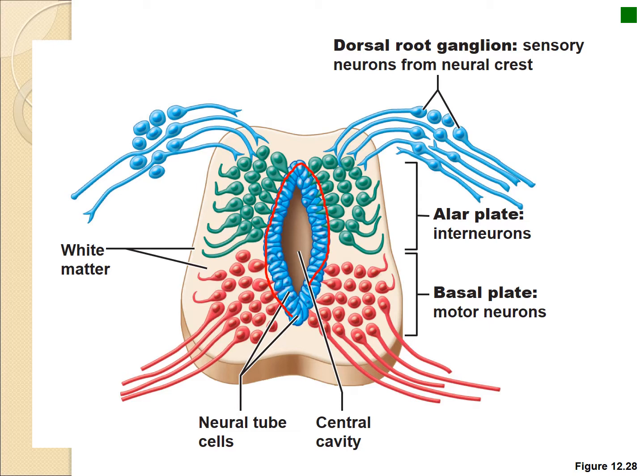So we see already that it's developed — we already have the right and left half formed, and all of what's called the alar plate and basal plate, which just means your dorsal and your ventral region have also already segregated.